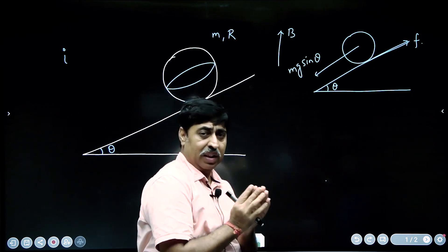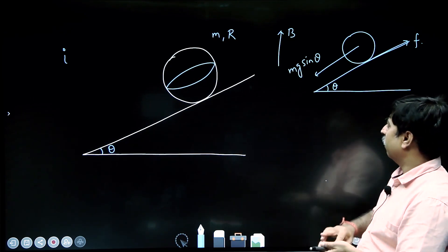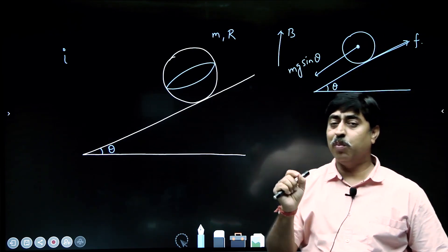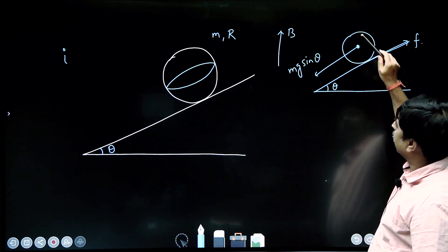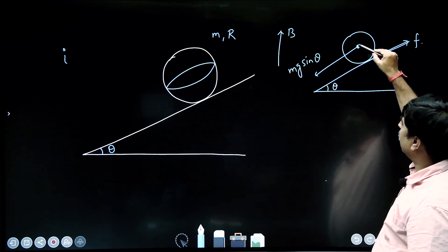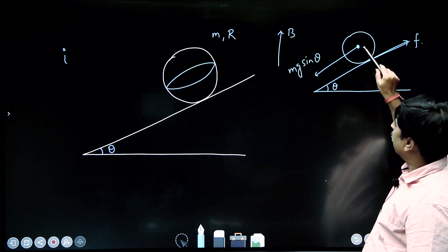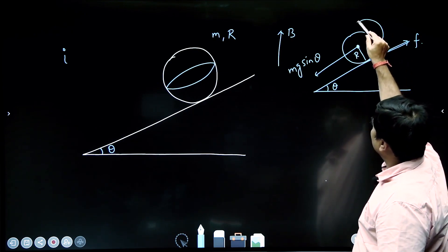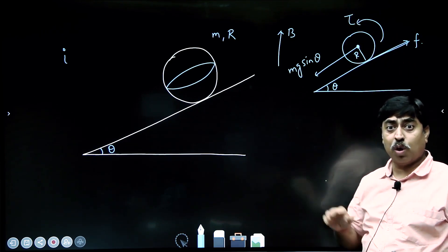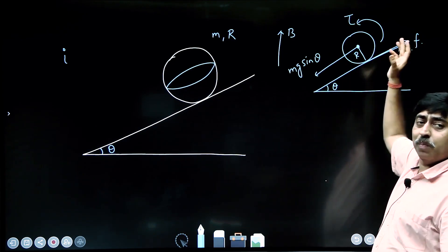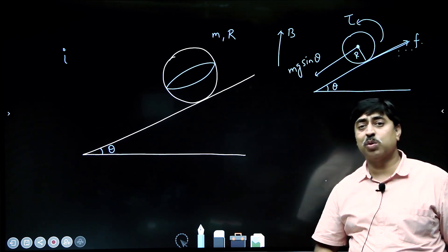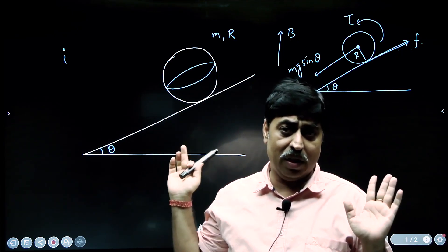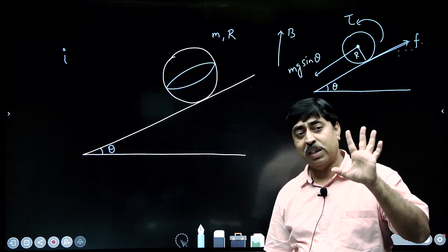If friction equals mg sin theta, the net force is zero — that is fine. But what about the torque about the center of the sphere produced by friction? The normal reaction and mg cos theta both pass through the center and produce no torque, but the friction force produces a counter-clockwise torque, causing angular acceleration. So the sphere cannot remain in equilibrium this way, yet the question says it is in equilibrium.